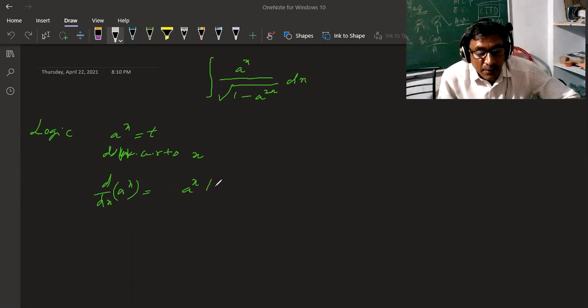Log A divided... a power x B, derivative of a power x A, then log A is a constant, a power x into log A.